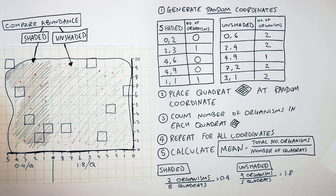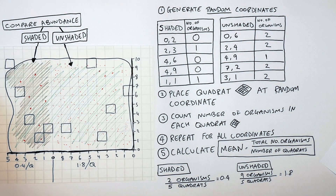This is because there is more sunlight in the unshaded region, which means more photosynthesis can take place, which means that more plants will grow.